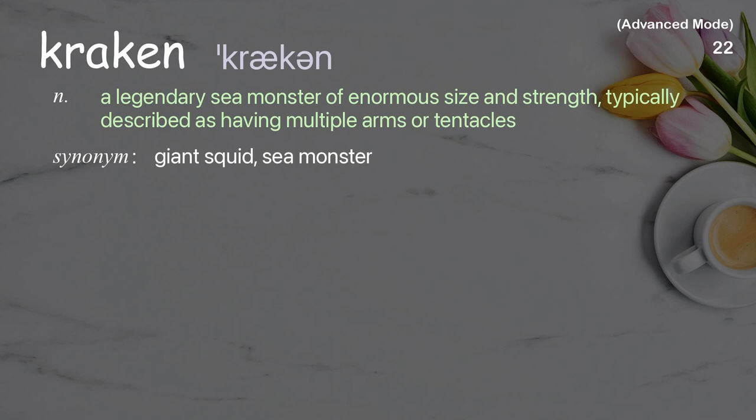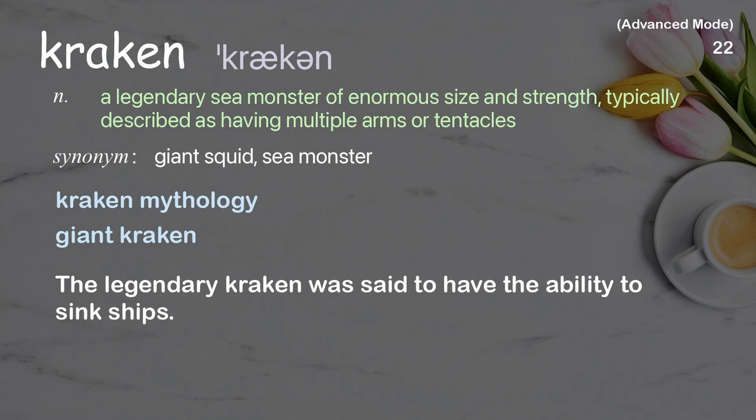Kraken: A legendary sea monster of enormous size and strength, typically described as having multiple arms or tentacles. Examples: Kraken mythology. The legendary kraken was said to have the ability to sink ships.